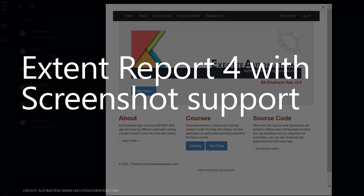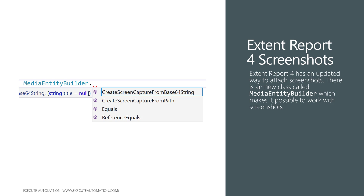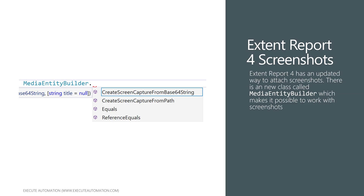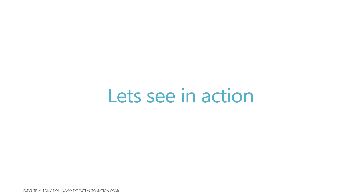The ExtentReport screenshot we're discussing today uses an updated approach. There is a new class called MediaEntityBuilder which makes it possible to work with screenshots. Do not confuse this with the ExtentReport 3 way — things like ExtendTest.AddScreenshot or AddScreenCaptureFromPath will not work this time. We should be using MediaEntityBuilder to attach a screenshot from either a file path or a base64 string.